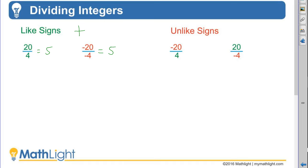Unlike signs: in the first example, we have a negative divided by a positive, and in the second example, a positive divided by a negative. When the signs are not the same, the quotient will be negative.